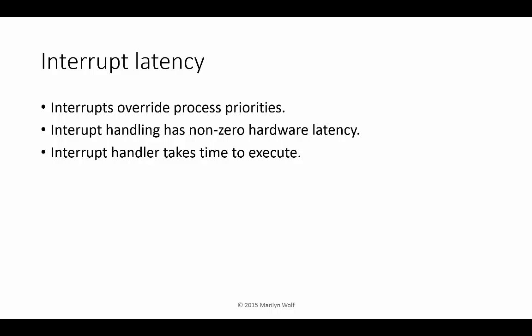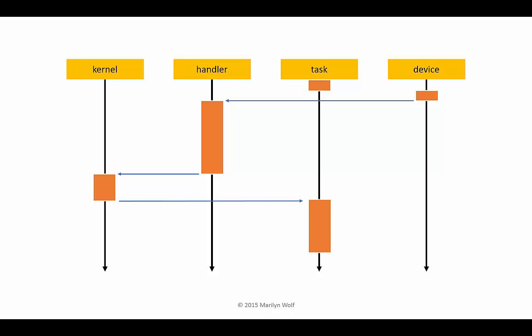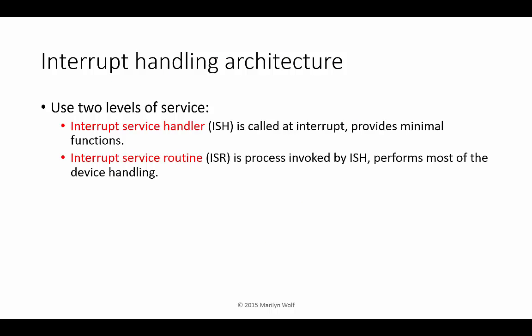Interrupt handling has non-zero latency, and that latency takes away from whatever the operating system is doing. A task is executing, a device interrupts, the interrupt handler is executed, and then we go to the kernel to decide what task should run next. To minimize time spent in the hardware-driven interrupt routine, we often divide interrupt handling into two levels of service: the interrupt service handler (ISH), which does a minimum amount of work, and the interrupt service routine (ISR), which is a process controlled by the operating system and does not interfere with normal scheduling.